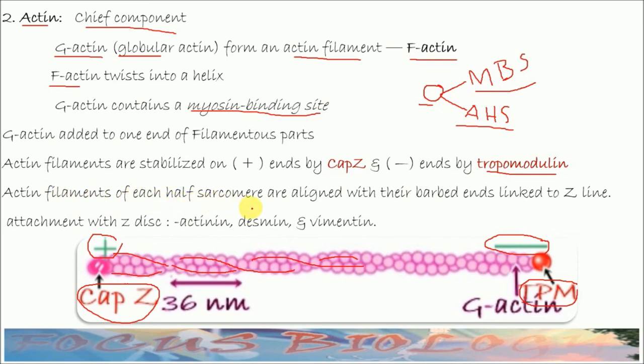Actin filaments of each half sarcomere are aligned with their barbed ends to Z lines. That is, this cap Z is attached to the Z disks. Attachment with the Z disks is also supported by alpha actinine, desmin, and vimentin. These three proteins also help in associating this thin filament to the Z disks.